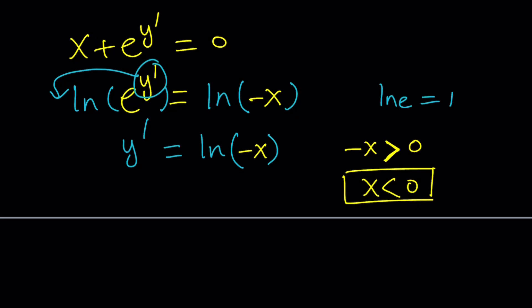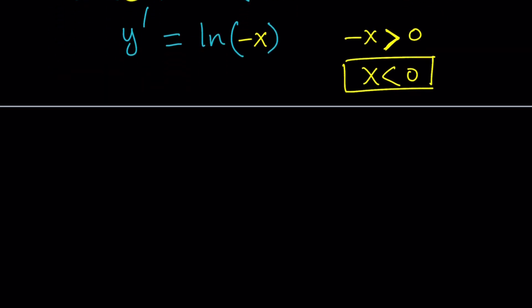But guess what? But this is not y. This is y prime. So we still have to find y. And we can do that by integrating both sides. Okay? So let's go ahead and do it. To find y, we're going to go ahead and integrate ln of negative x dx.